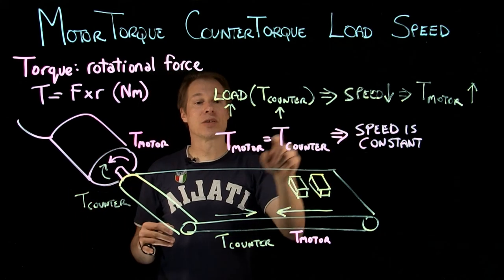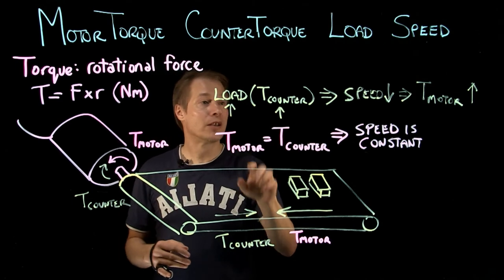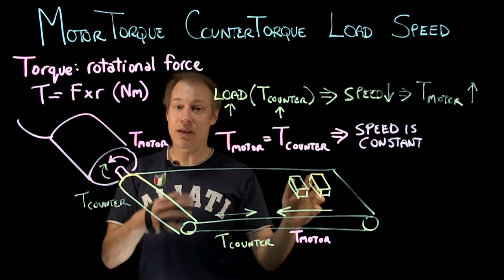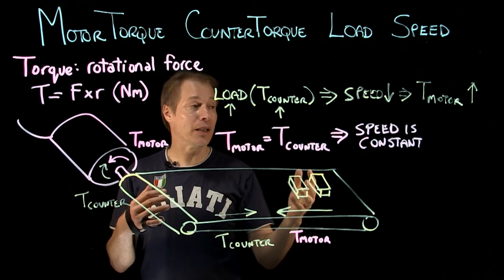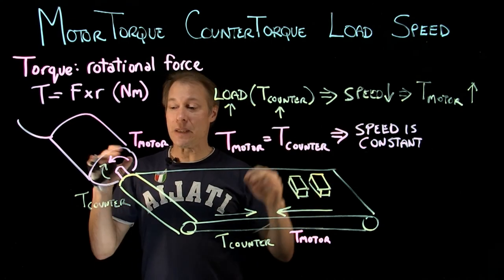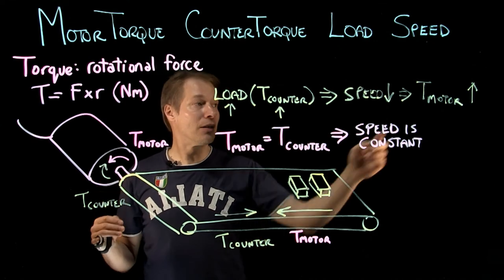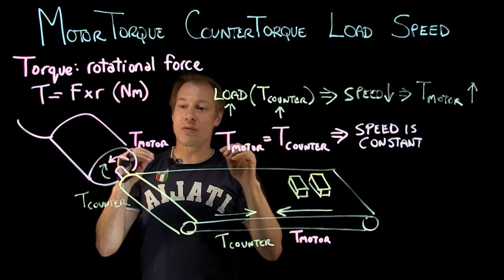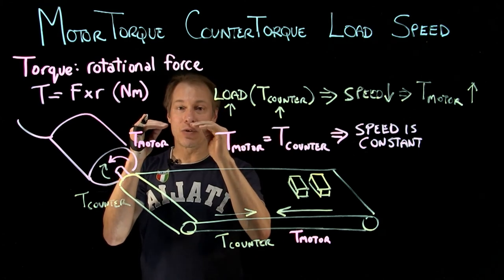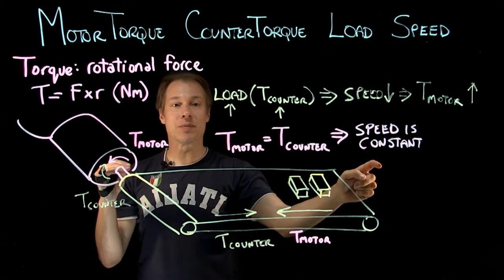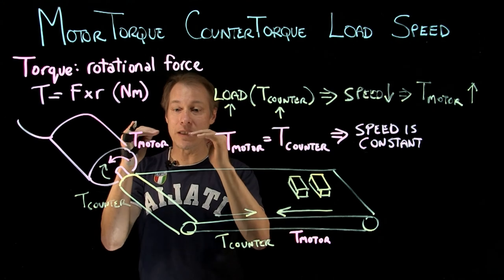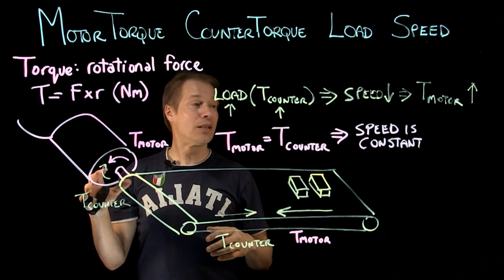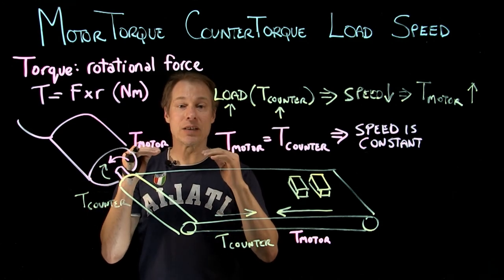Let's start over again. As load goes up, counter torque goes up, because they're the same thing. Then the speed of the motor slows down. When the speed slows down, the torque of the motor goes up. As the motor torque rises to match the counter torque, when they are even, the speed will stabilize — it will be a new constant speed, lower than it was before, but it will remain constant.